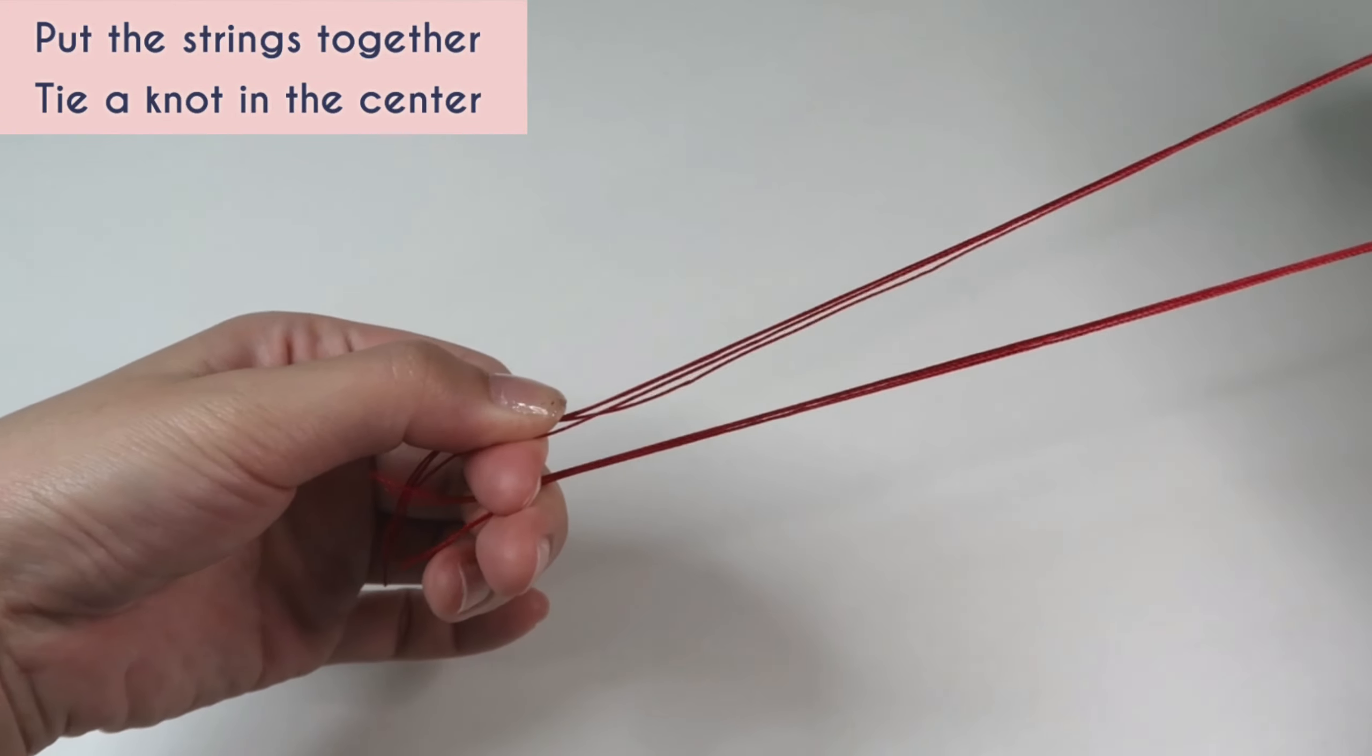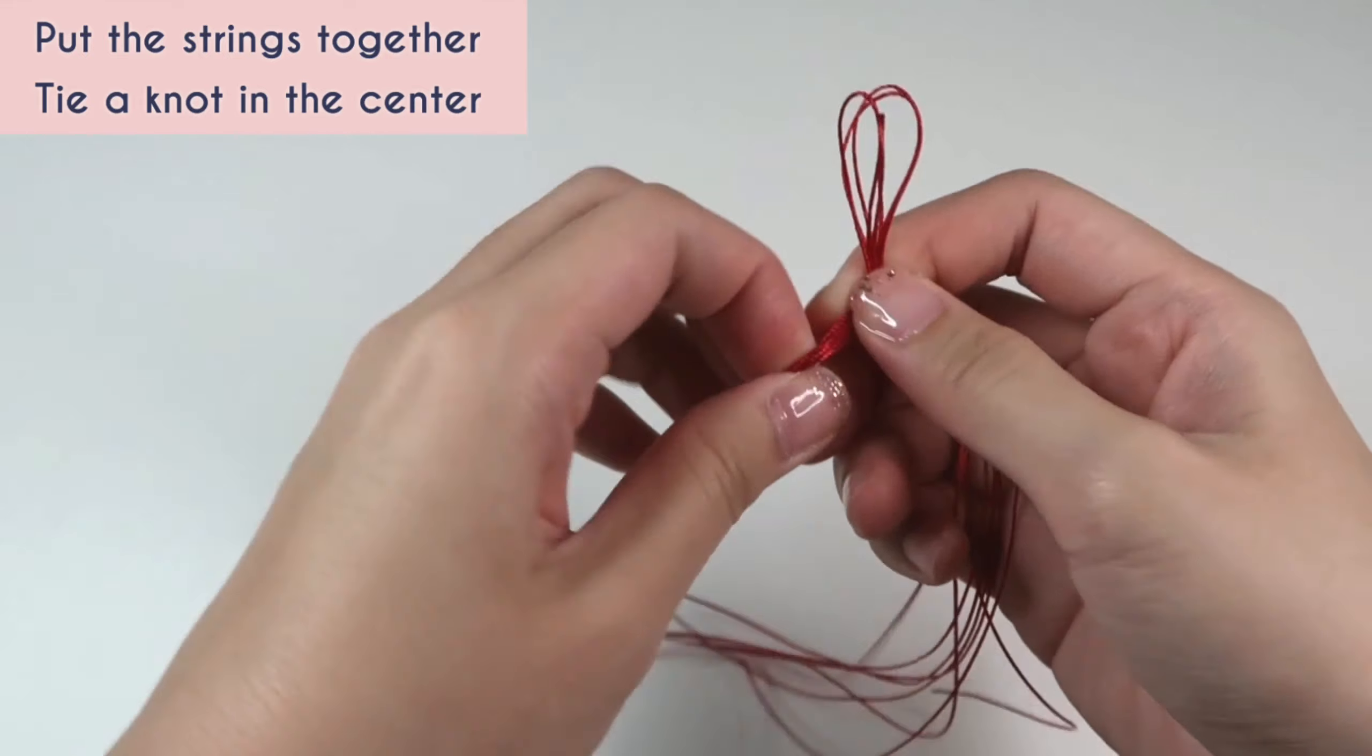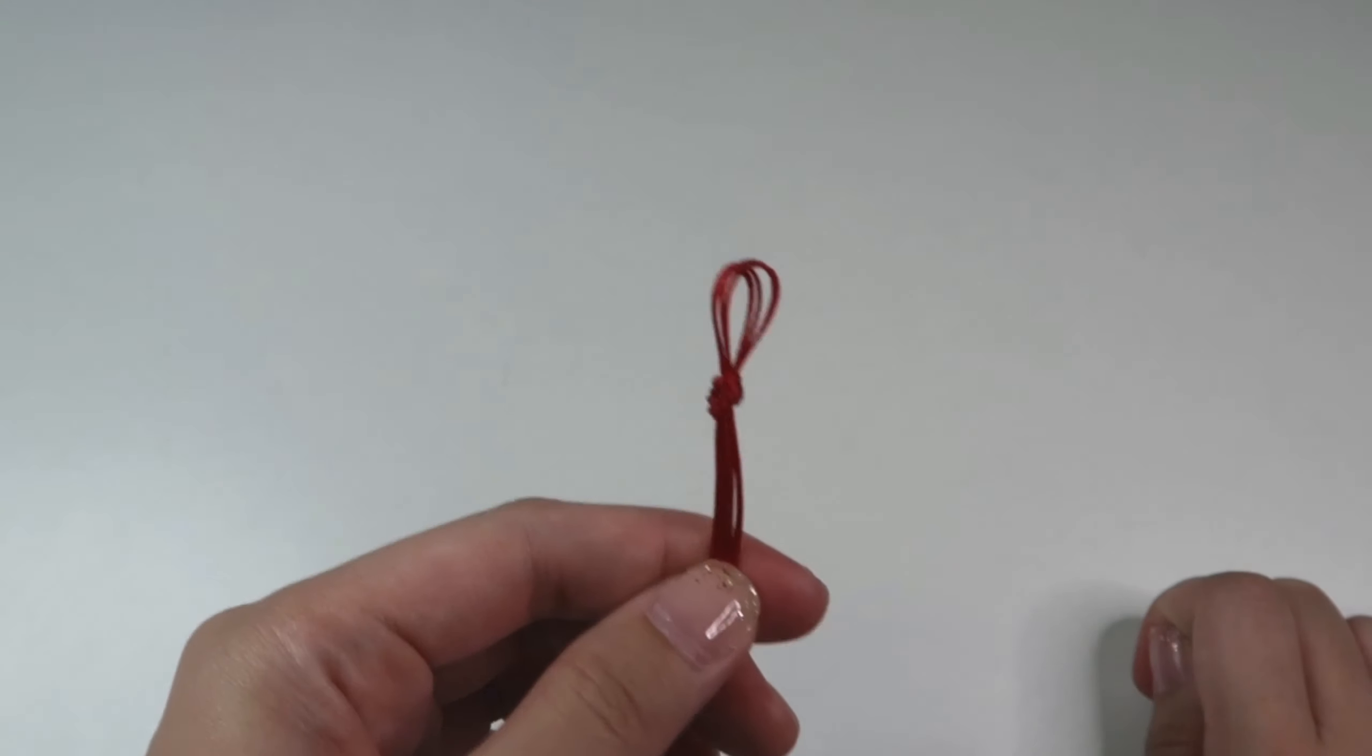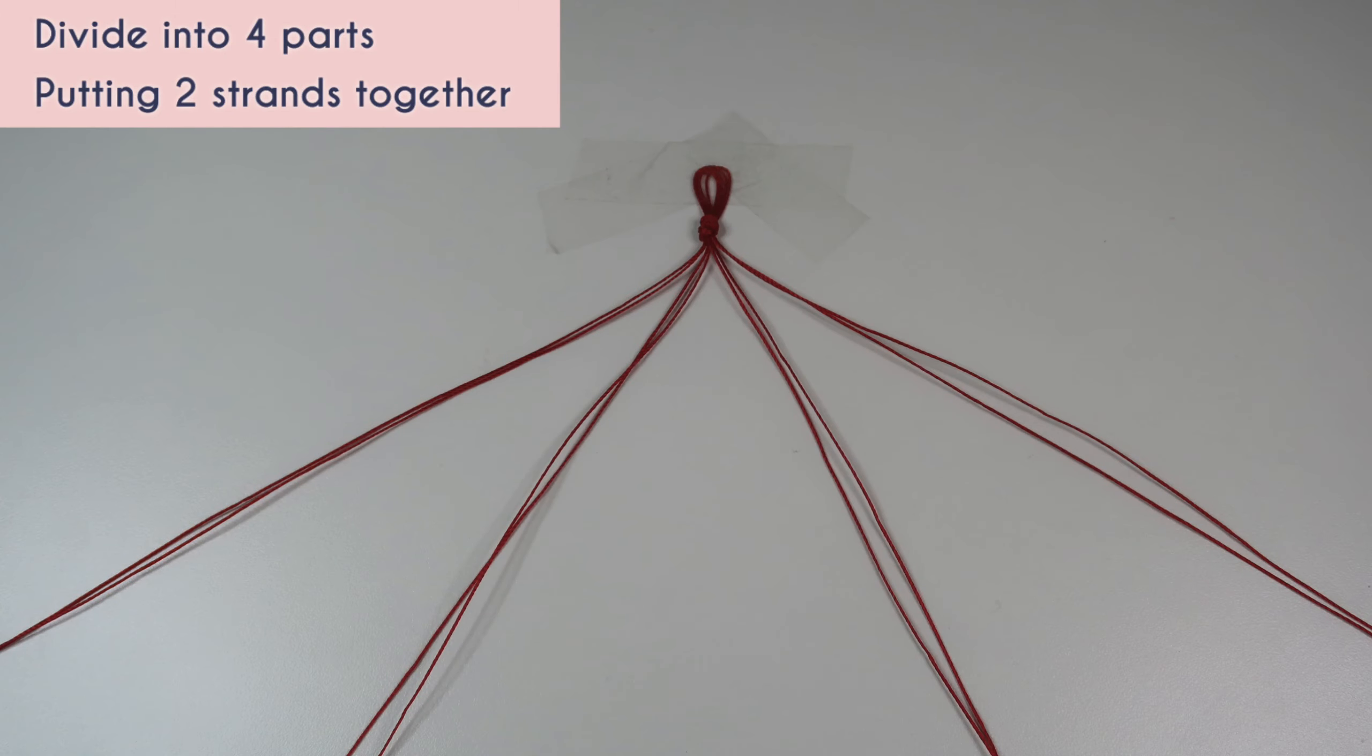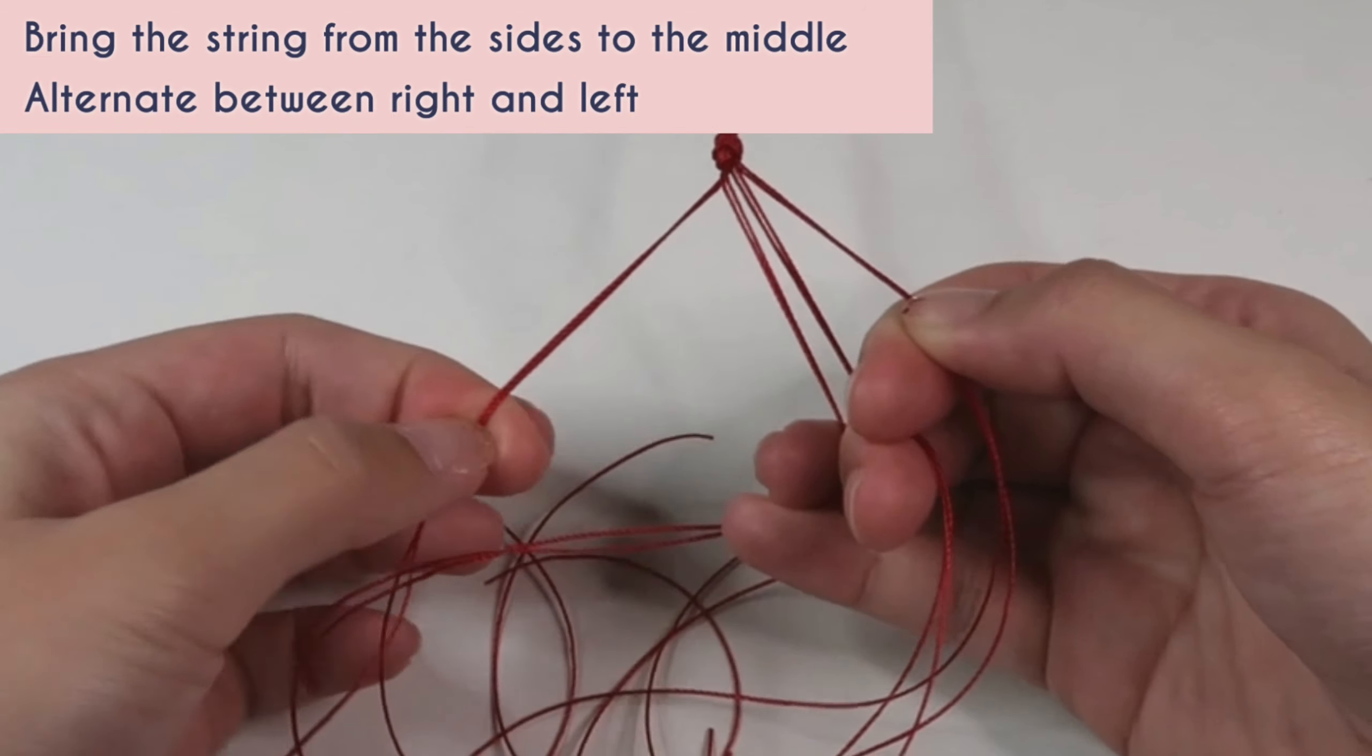Put the strings together, tie a knot in the center. Divide into 4 parts. Bring the strings from the side to the middle, alternate between right and left.